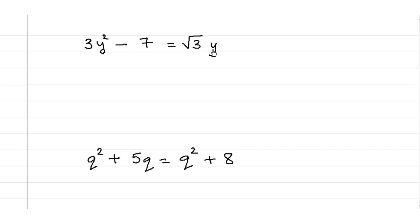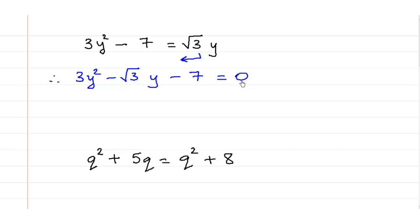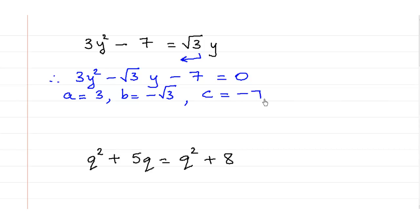Next: 3y² minus 7 is equal to √3·y. We take √3·y to the left side, giving 3y² minus √3·y minus 7 is equal to 0. It has one variable y, and the coefficient of y² is 3 which is not 0. √3 is an irrational number but still a real number, and a, b, c need to be real numbers. So the value of a is 3, the value of b is negative √3, and the value of c is minus 7. This is also a quadratic equation.